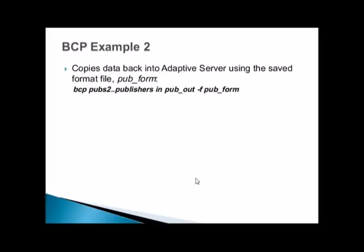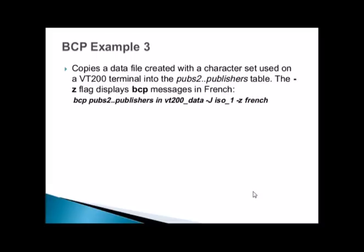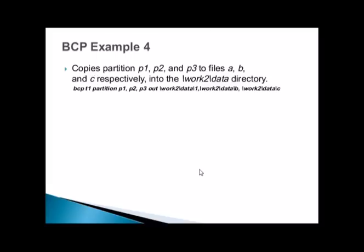Example 2 copies data back into the Adaptive Server using a saved format file: bcp pubs..publishers in pubs.fmt. Example 3 copies a data file created with the character set used on a VT200 terminal into the pubs2..publishers table, with the -z flag displaying BCP messages in French: bcp pubs2..publishers in vt200_data -z iso_1.